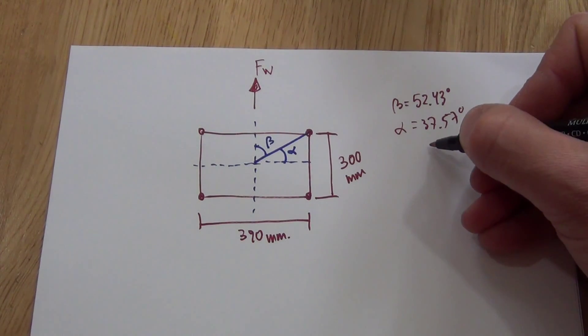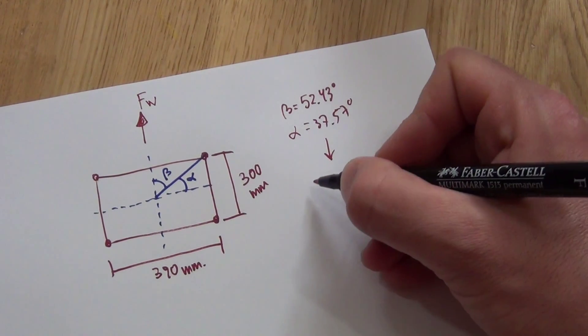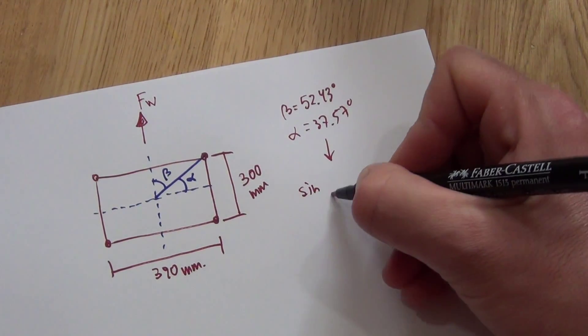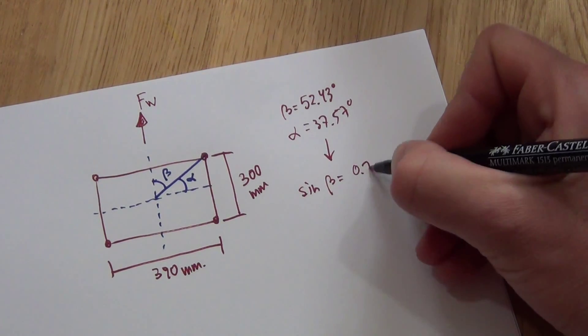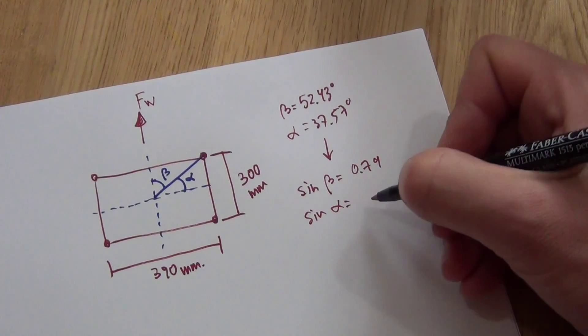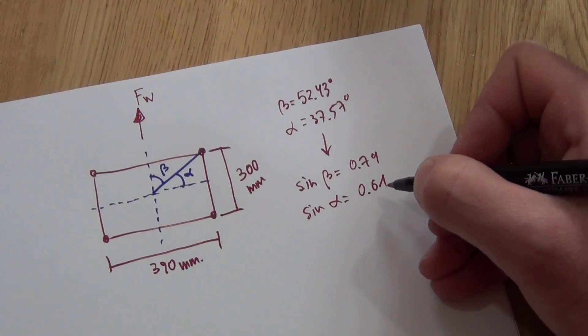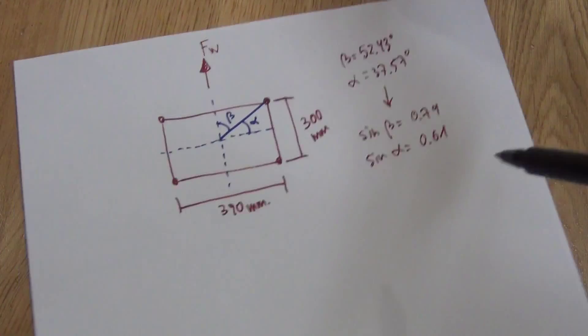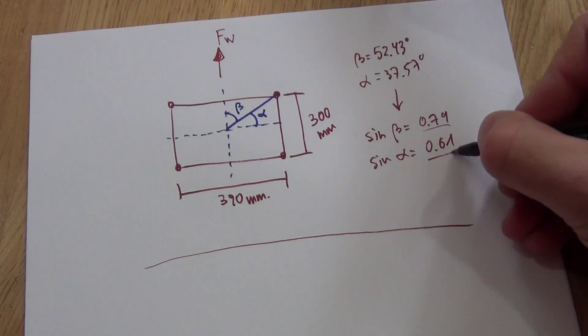Then you calculate the sine of these two. So sine of beta in my case is 0.79, and sine of alpha in my case is 0.61. So we got these two values.